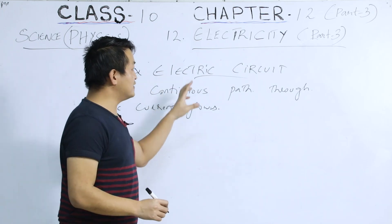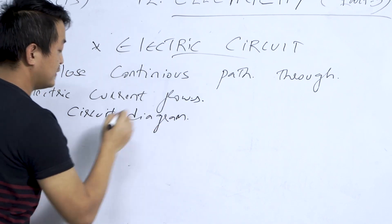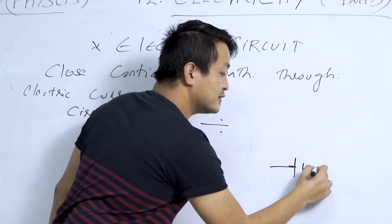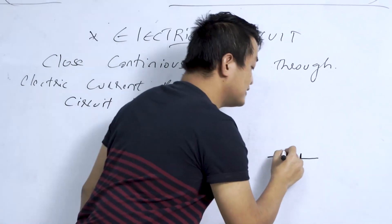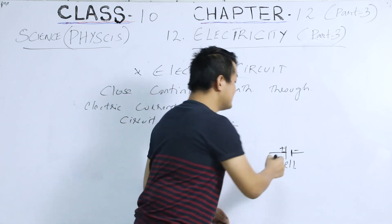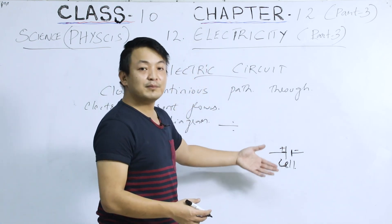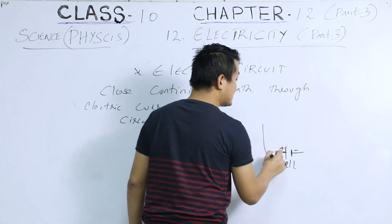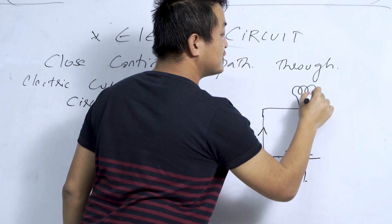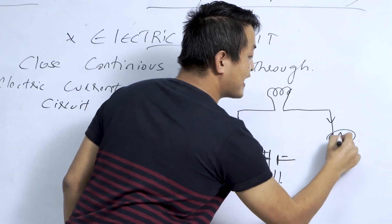Now I will give you a circuit diagram. The circuit diagram will have a cell — a group of cells is known as a battery, while a cell is just a single one. These are the connecting wires, this one is the bulb, and this is the ammeter.